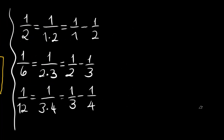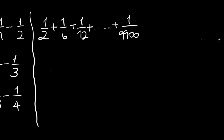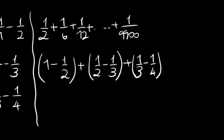Putting these into our sum, each fraction becomes a difference of two unit fractions in this telescoping pattern, and the last one will become 1 over 99 minus 1 over 100.